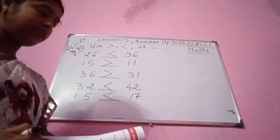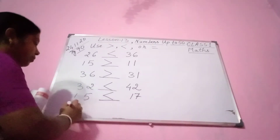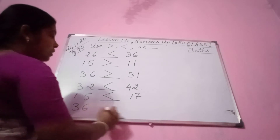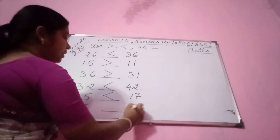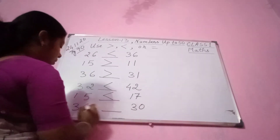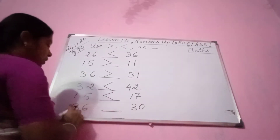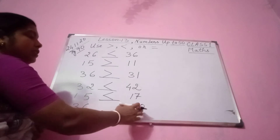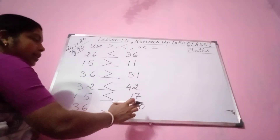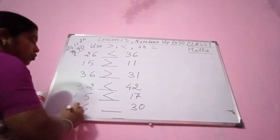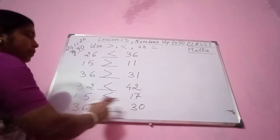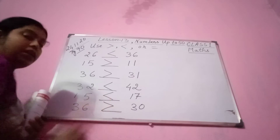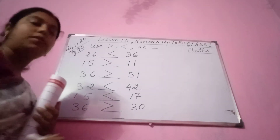Next number — 36 and 30. Please see here: 3 tens and 6 ones is 36, and 3 tens is 30. So 36 is bigger than 30 — put this sign.